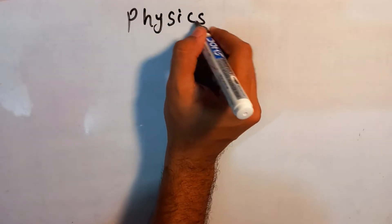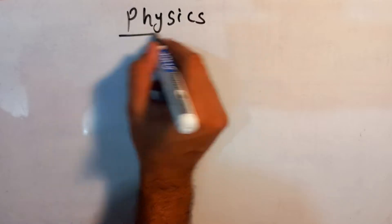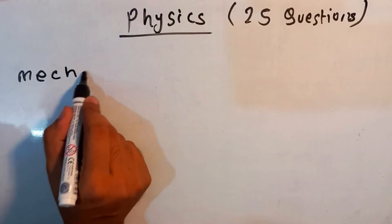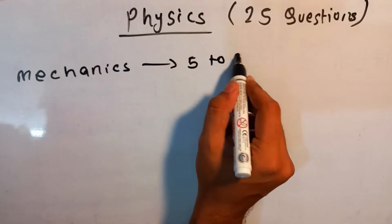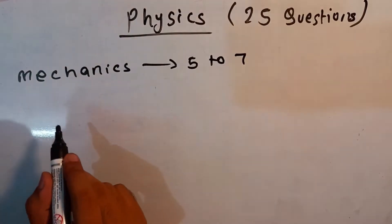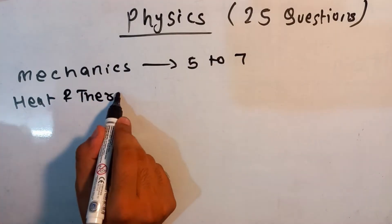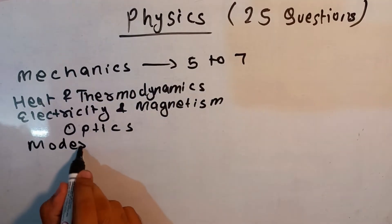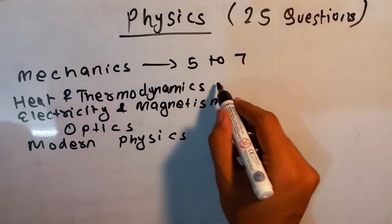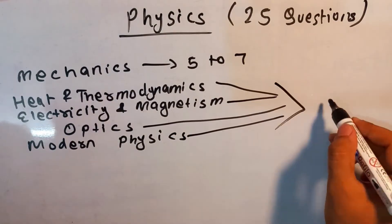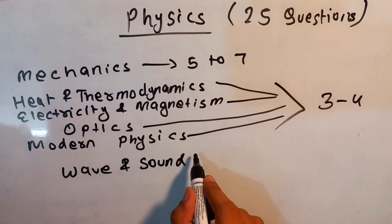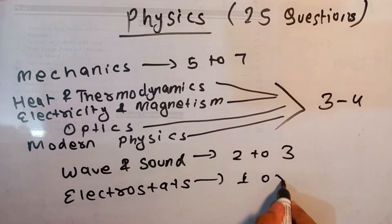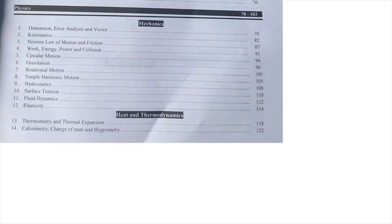Next up we have the subject physics. From physics also, 25 questions are asked in the examination. Here 5 to 7 questions are asked from mechanics; 3 to 4 from heat and thermodynamics, optics, electricity and magnetism, and modern physics each; 2 to 3 questions from wave and sound; and 1 or 2 questions from electrostatics. Similarly, here is the list of chapters from each topic.